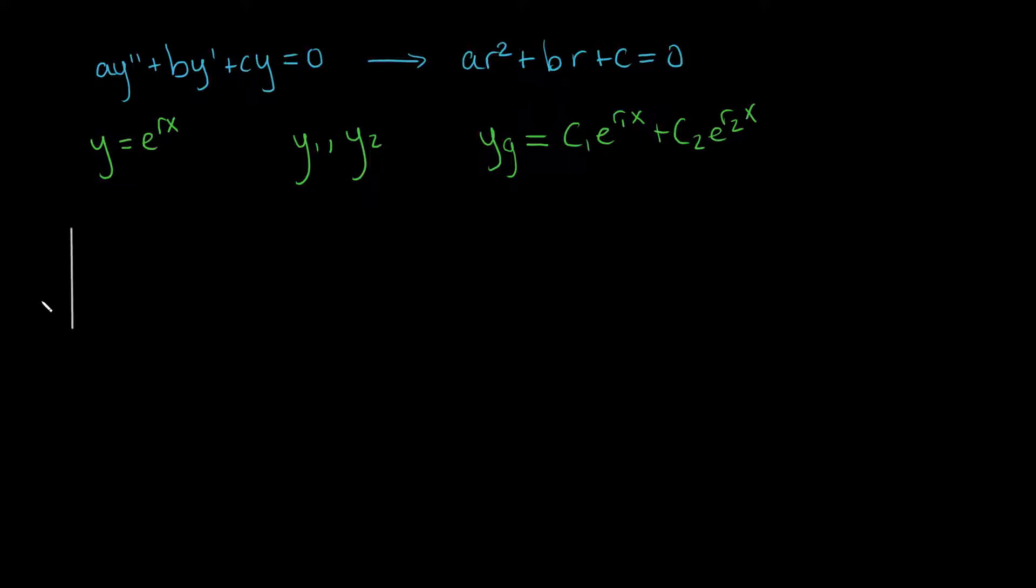This is when our auxiliary equation, our characteristic equation up here, when we graph the parabola that it makes, if that parabola has no real roots, as this parabola has, then we get that it has two complex conjugate roots.